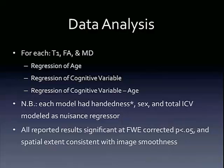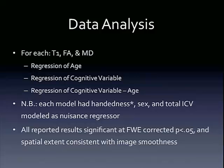I know a lot of you are asking yourselves, well, sex might be the most interesting thing to look at in a data set like this, and you're probably right. This is just the initial first-pass analyses — later on, we'll definitely be looking at sex, perhaps handedness, but definitely not total intracranial volume, because we're not interested in how the brain grows. All the subsequent analyses are corrected at an alpha level of 0.05 using FWE correction — family-wise error correction — and the spatial extent is consistent with image smoothness.